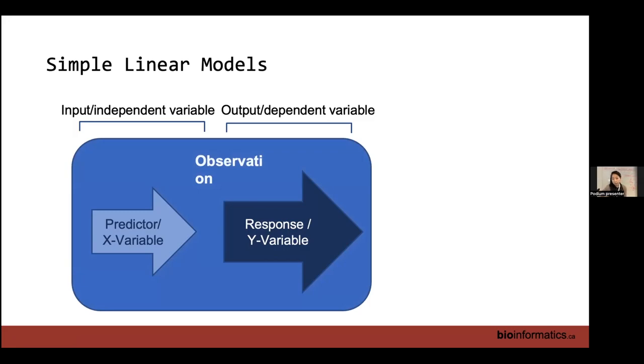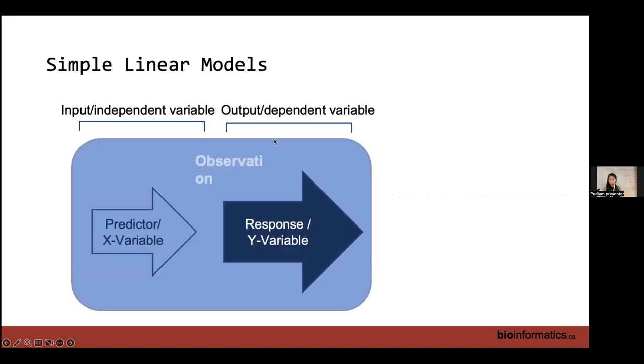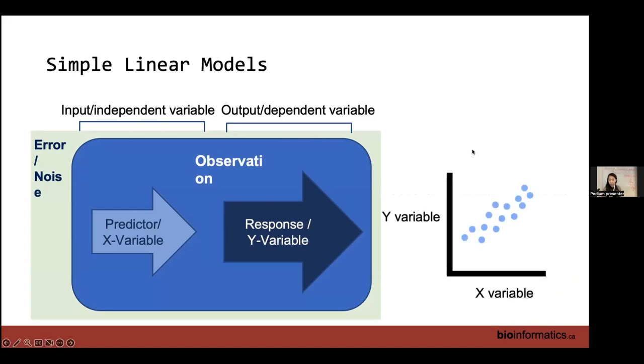In our linear models, we have observations. So for the data that we're working with, we have an observation. So person number one had this measurement for glucose, this measurement for BMI. Observation number two, we have this level and this level. So we have a bunch of observations. Everything is wrapped up in noise for like technical noise and perhaps just like biological noise.